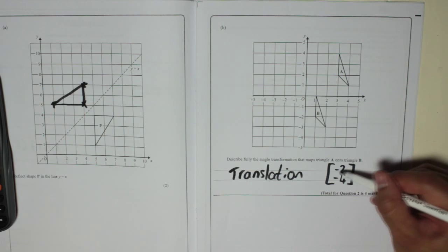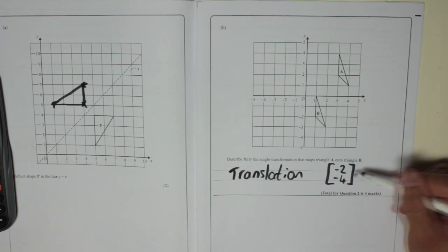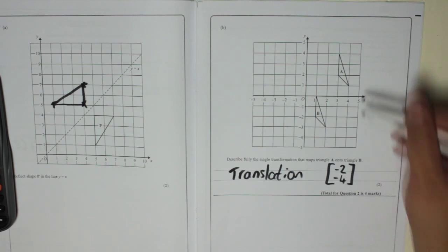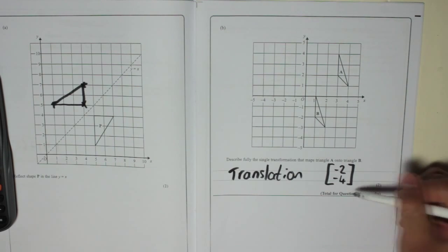So just remember, with the vectors the top number is left and right. Left is negative, so minus two means two left. Right is positive, so for example five right would be five. The bottom number in the vector is up and down. So up is positive, down is negative, so minus four means four down. So two left, four down is minus two, minus four.